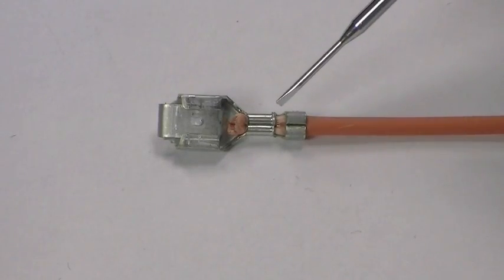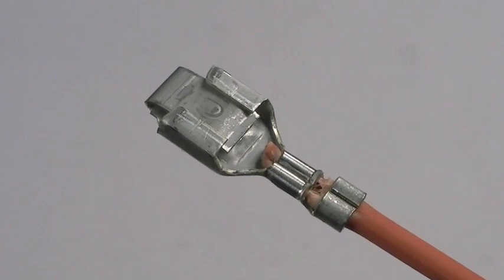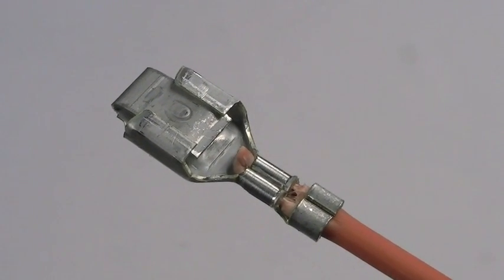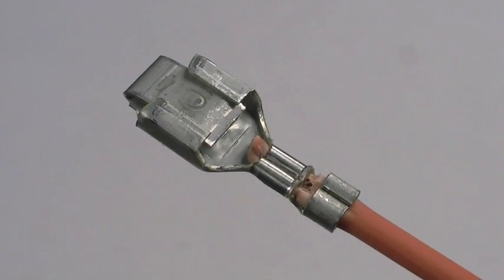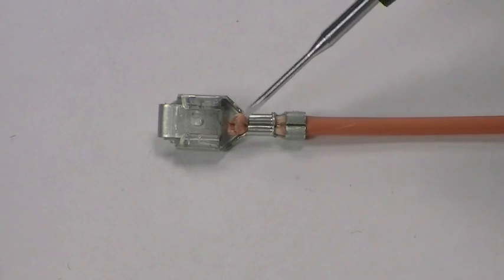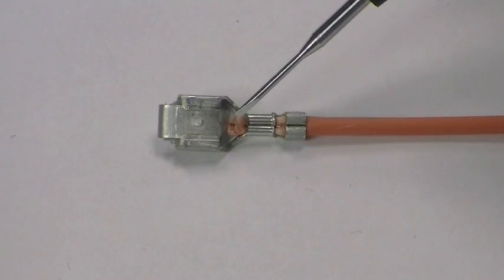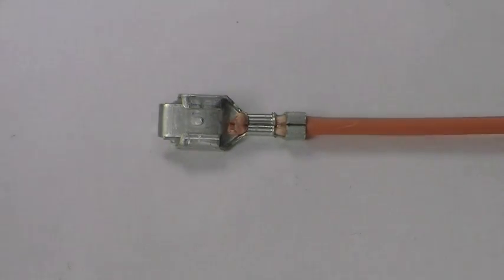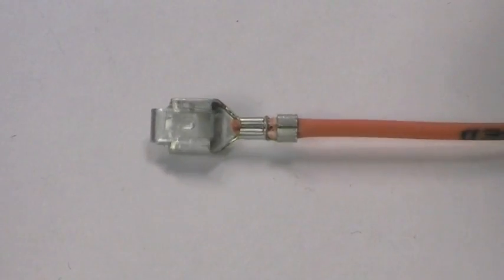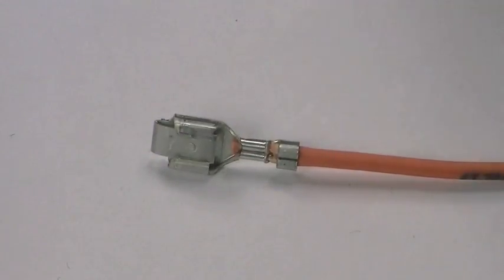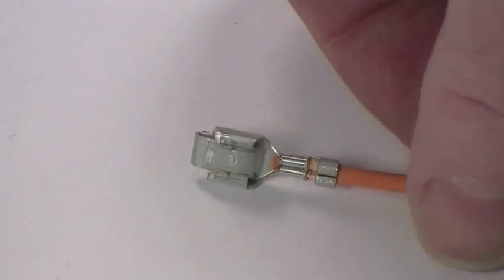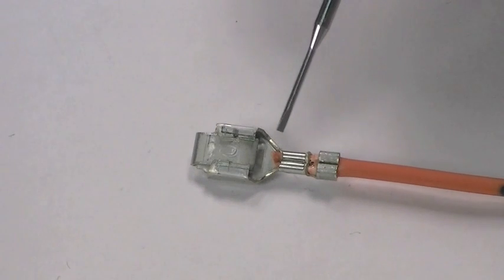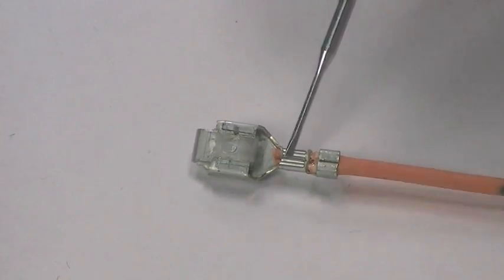We're going to point out what happens when you get a bad crimp. In this first case, somebody forgot to strip the wire. So they've crimped it, it looks like it's a great crimp, and a little bit of the insulation is sticking up on top of this wire. But you can see that there's no contact between the terminal and the copper of the wire. There would not be conductivity on this terminal.